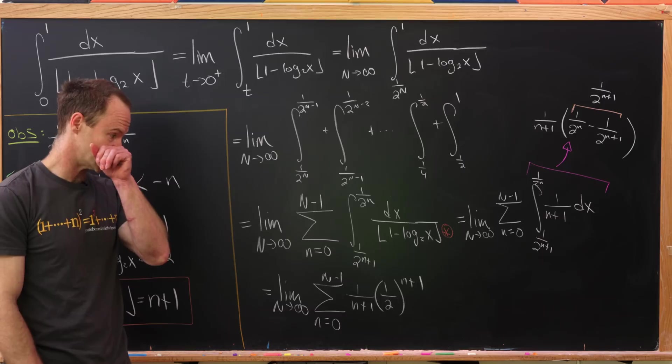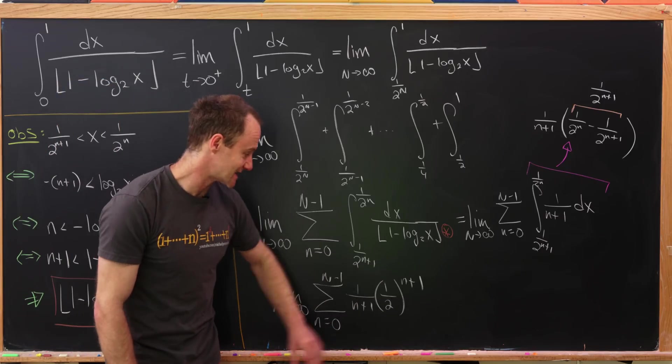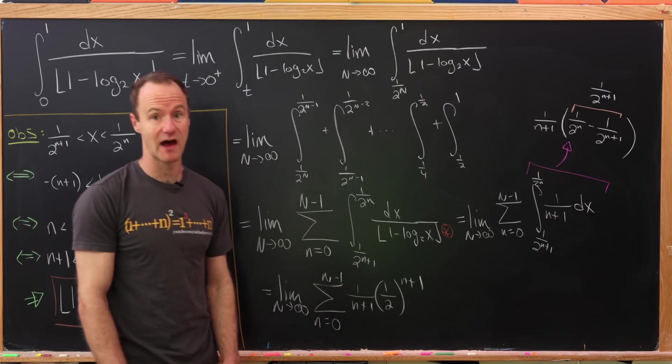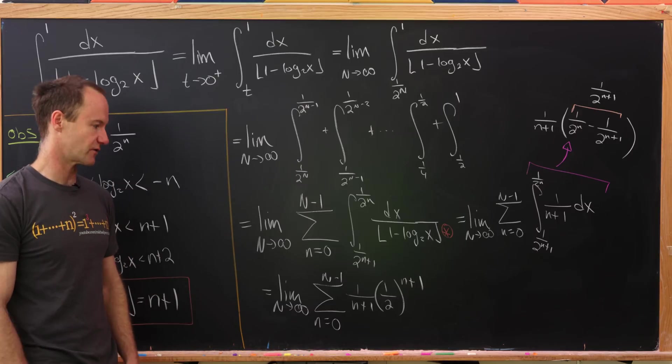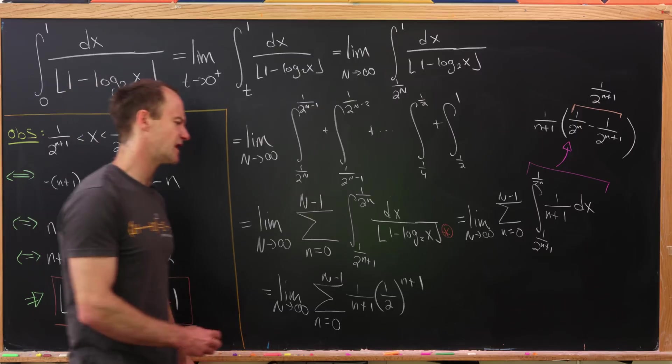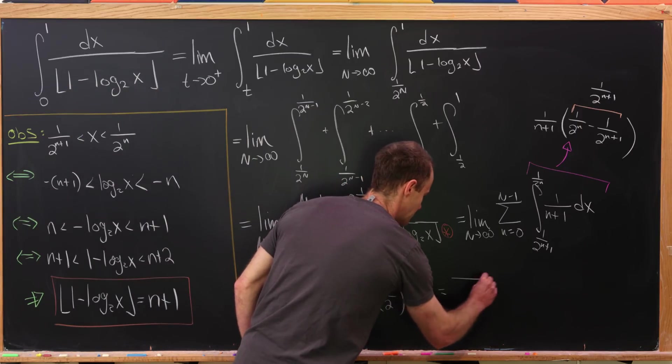Notice it's less than the series if we left out the 1 over n plus 1, and that's simply a geometric series which we know converges. So since this converges, we can rewrite this as an infinite sum.